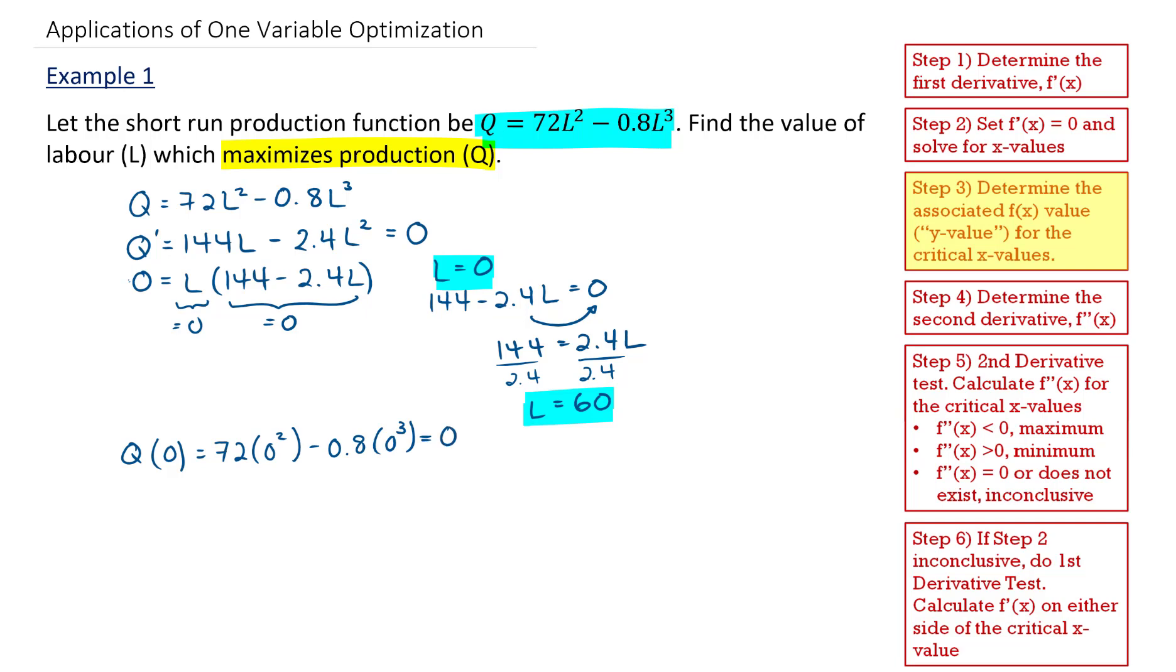Now for when L is equal to 60, I have Q of 60 is equal to 72 times 60 squared minus 0.8 times 60 cubed. And this gives me 86,400. So now I have my two critical coordinates. One is at (0, 0) and the other is at (60, 86400).